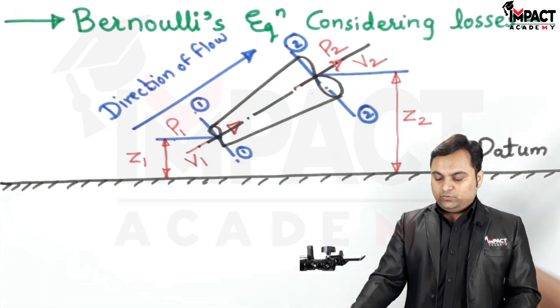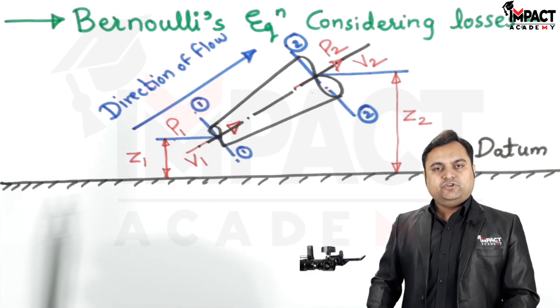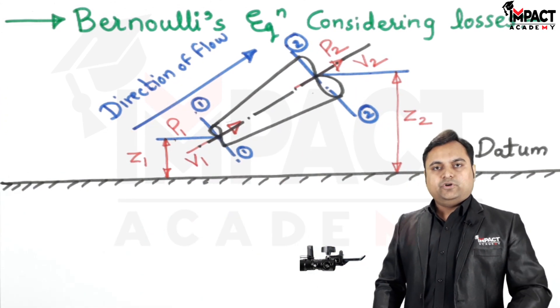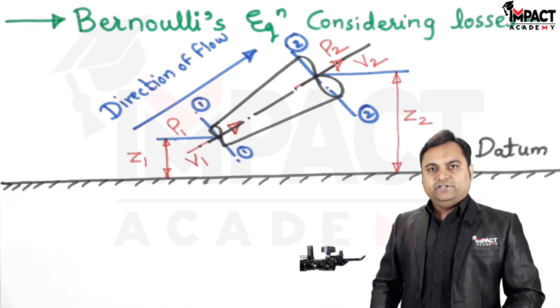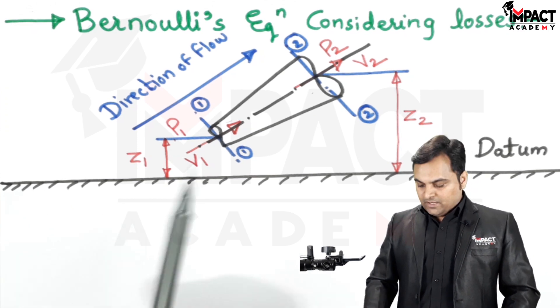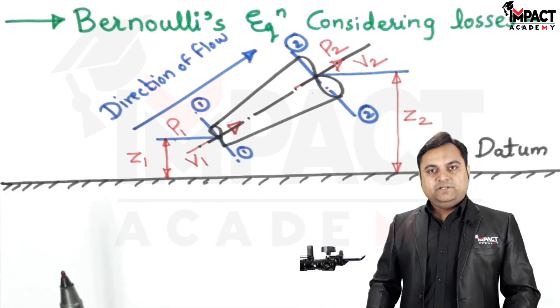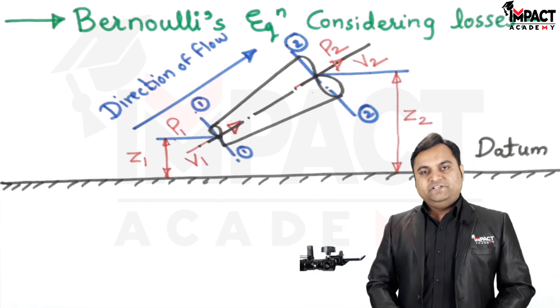These are the intensities of pressure. Unit would be either in terms of Newton per meter square or kilonewton per meter square. If it is in bar, we need to convert it. Velocity would be in terms of meter per second, and z, these heights, would be in the form of meter.